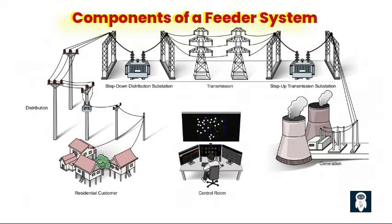Third, transformers play a crucial role in the feeder system. Distribution transformers at the substation or along the feeder step down the voltage to suitable levels for residential, commercial, or industrial loads. Fourth, protection devices — including fuses, circuit breakers, relays, and protective relays — are installed along the feeder system to detect and isolate faults. They monitor electrical parameters such as current, voltage, and power factor, and when a fault is detected, they trip the circuit to isolate the faulty section and protect the equipment.